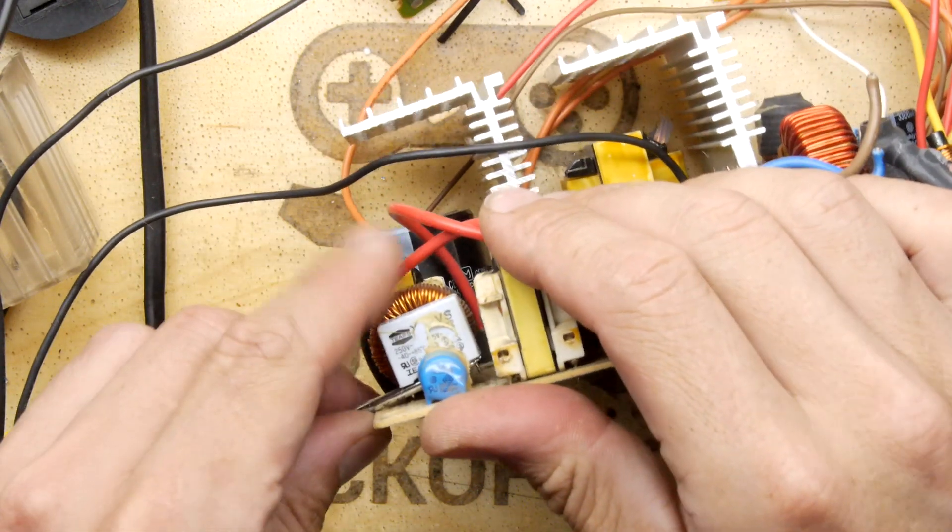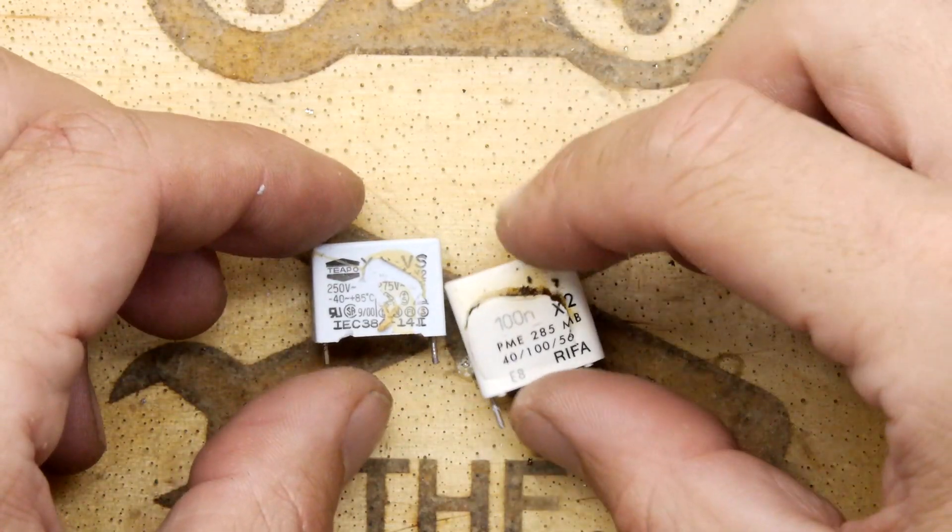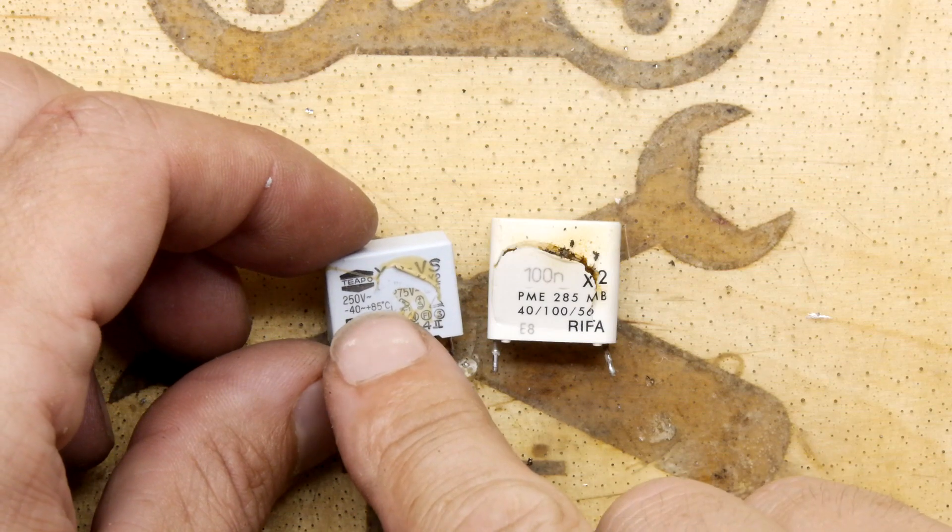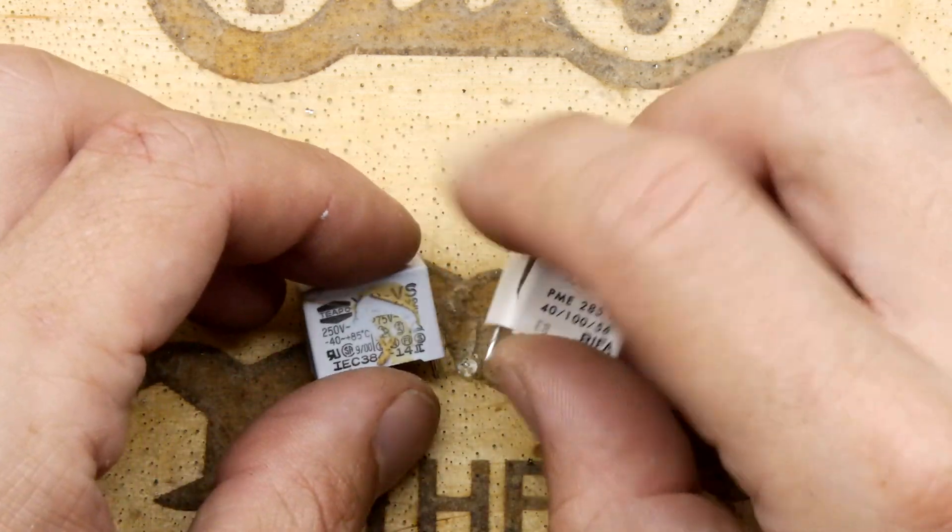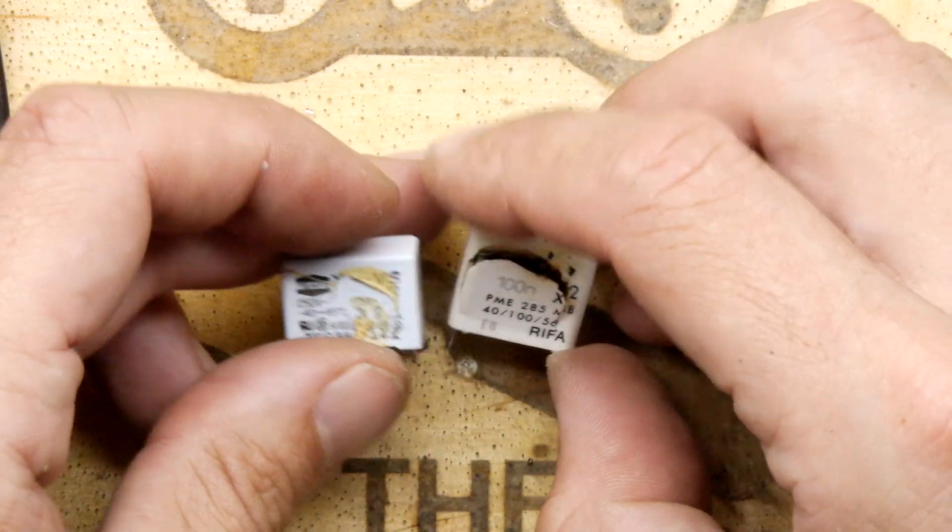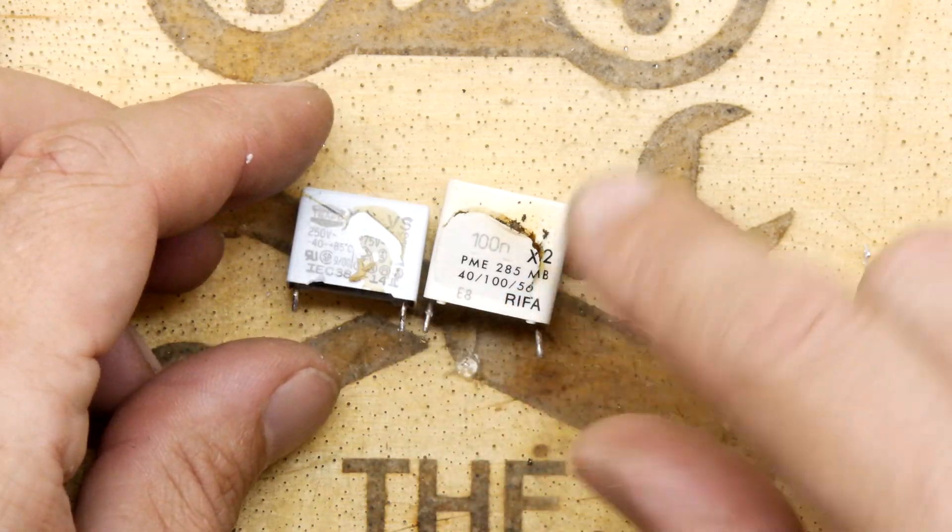So this is a tipo cheapo. It does have the same markings - the 250 volts there, the 275 volt AC which is the same that we get on there, and it also actually has the X2 in the corner which is good. But we can't see the rating, the nanofarad rating.